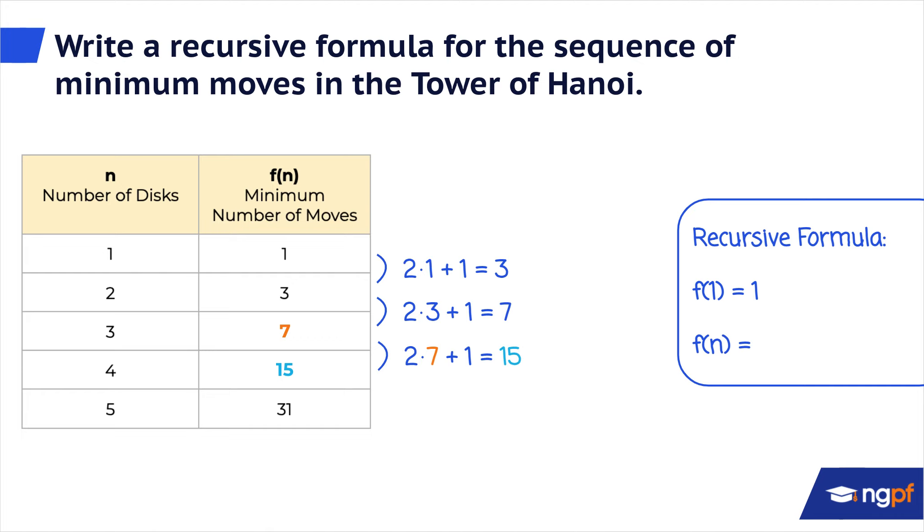We do the same thing to find the fourth term. The third term is 7. 2 times 7 plus 1 is 15. That's the fourth term.